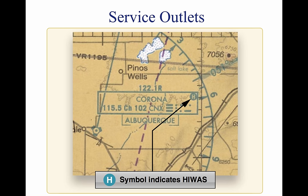Navigational aids that have HIWAS capability are depicted on sectional charts with an H in the upper right corner of the identification box. Transcribed weather broadcasts are only available in Alaska and are recorded on tapes and broadcast continuously over selected low or medium frequency and very high frequency omnidirectional radio range navigation system facilities. Generally, the broadcast contains a summary of adverse conditions, surface weather observations, PIREPs, and a density altitude statement if applicable.